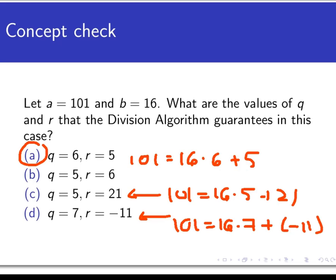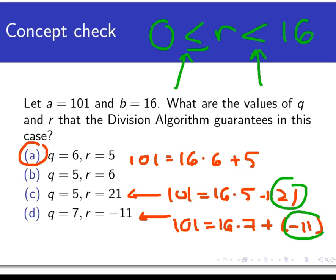Well it has to do with the inequality that's in the division algorithm, which states that the values of Q and R have to be, in this case, such that 0 is less than or equal to R, and R is less than 16. R has to be less than the thing I'm dividing by. Of the three values of Q and R in the concept check that make the equation work, only the one that's in A fits the inequality.